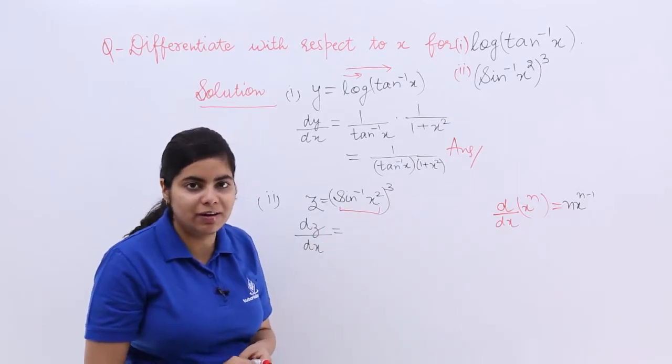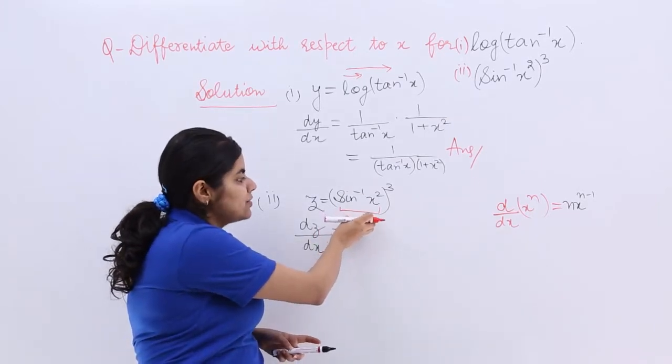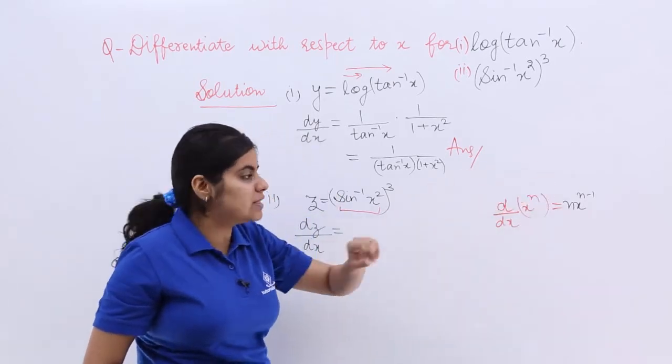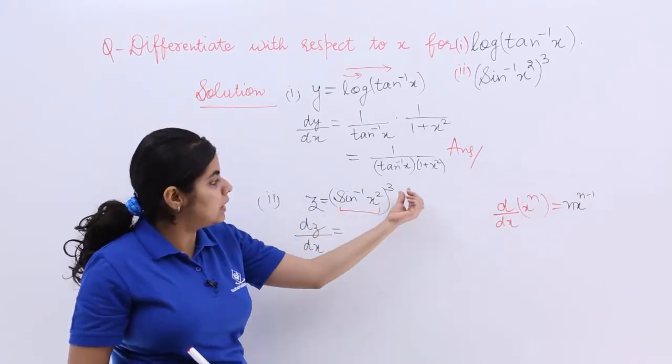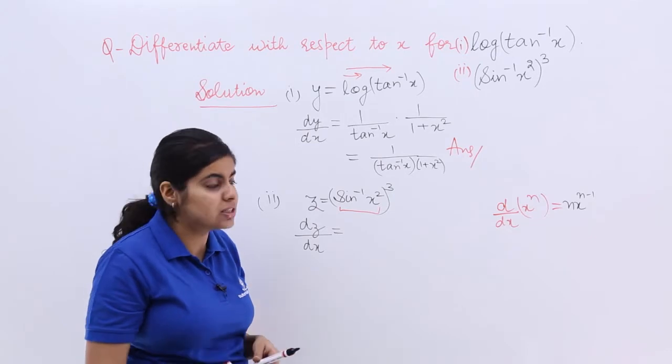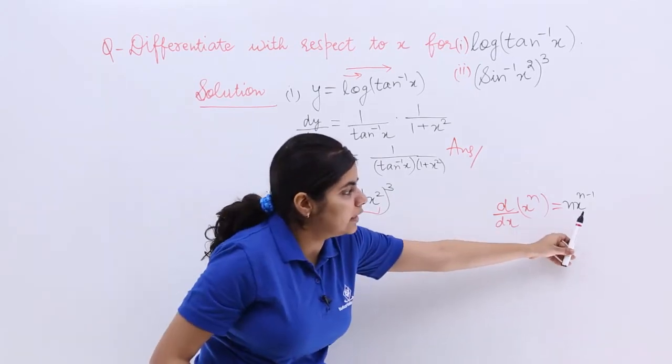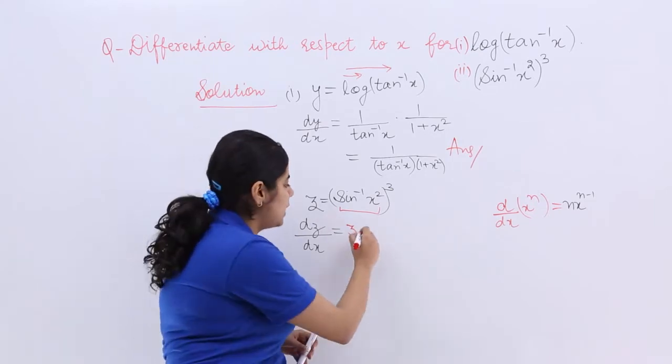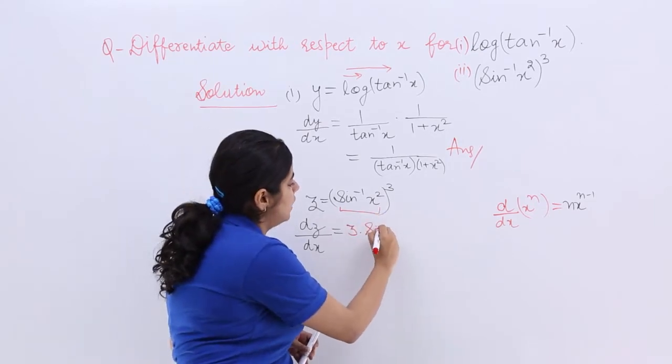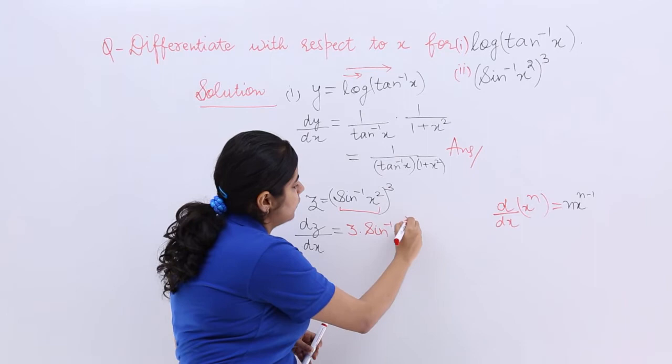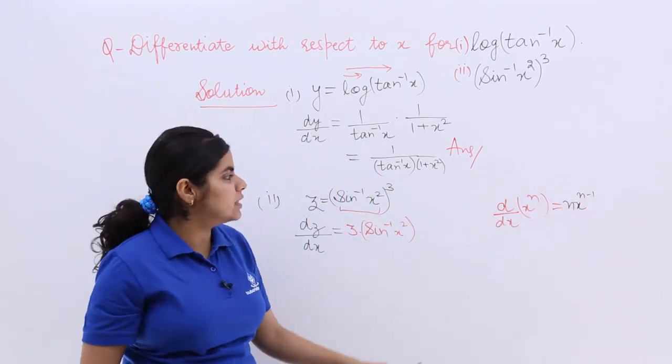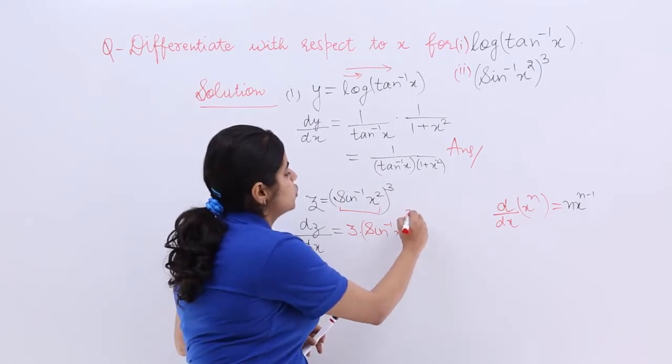We are going to use that same formula here. So this behaves as your x, the base. n behaves as the exponent or the power. 3 behaves as the power exponent. So it is n multiplied by x that means power multiplied by x means the whole thing raised to the power n minus 1 means 3 minus 1 which is 2.